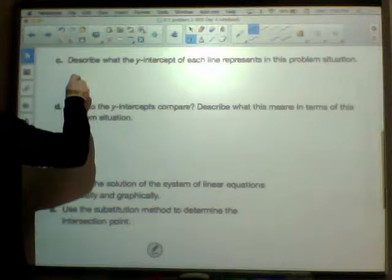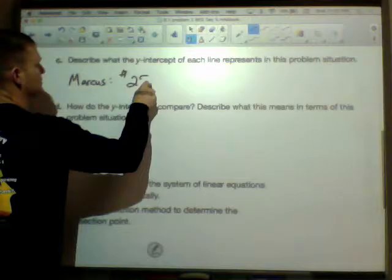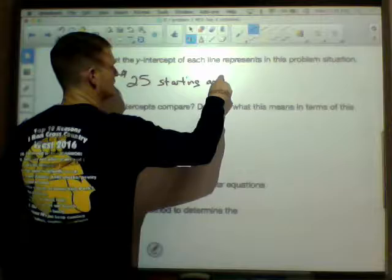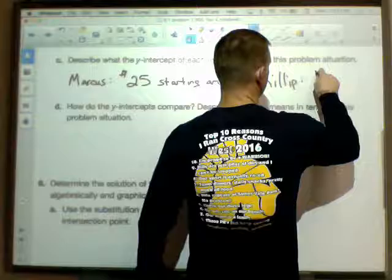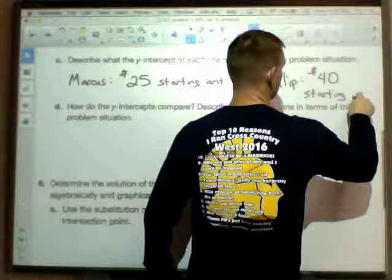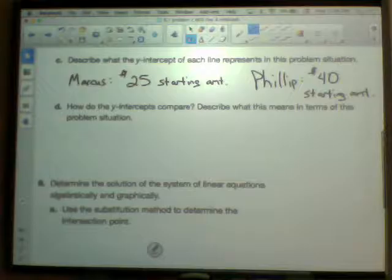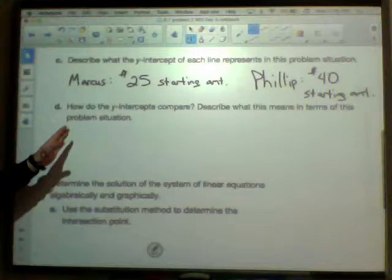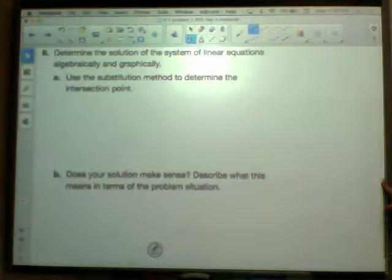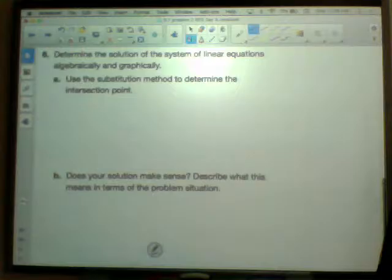On down to C, describe what the y-intercept of each line represents in the problem situation. The y-intercept for Marcus is 25, that's his $25 starting amount. But for Philip, that y-intercept is his $40 starting amount. Now how do the y-intercepts compare? Obviously Philip has got a $15 head start, so I'm hoping you said something about Philip - he got out of the gates a little bit more quickly than Marcus did.